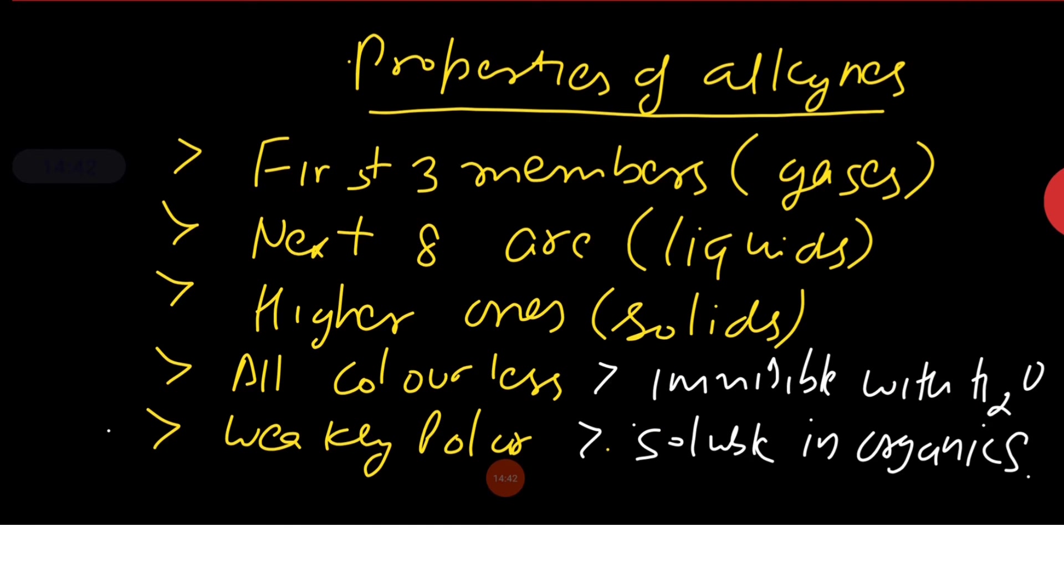Now let us have a look on physical properties of alkynes. First three members are gases, next eight are liquids, higher ones are solids. All alkynes are colorless. Except ethyne, all are odorless and weakly polar. These are immiscible in water and soluble in organic solvents.